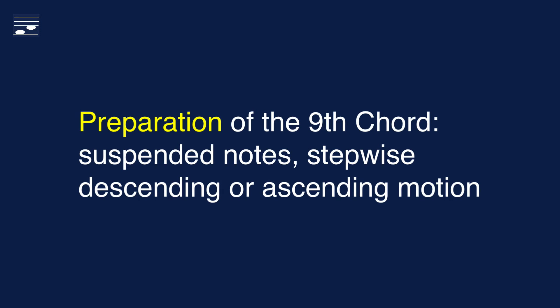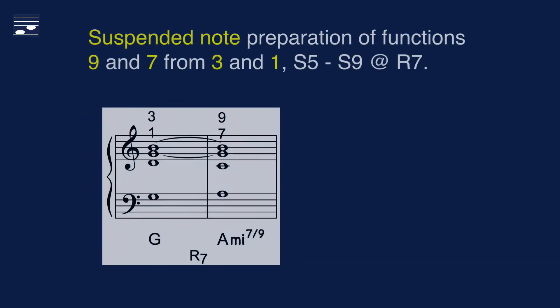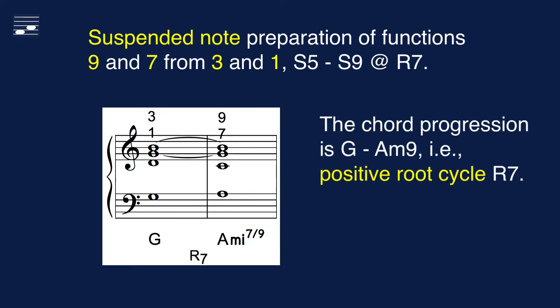For the preparation we have three options: either a pair of suspended, or stepwise descending, or stepwise ascending notes. The example shows the preparation by suspended notes of the functions 7 and 9 in the A minor 9 chord. They start as consonant functions 1 and 3 in the preceding chord, the G major triad. So this progression is S5 to S9 at positive diatonic root cycle R7.